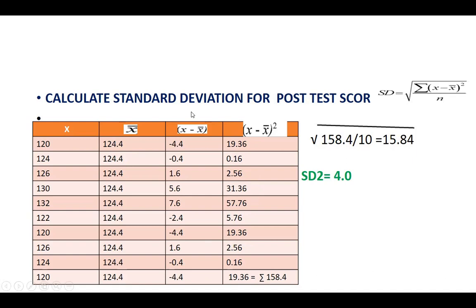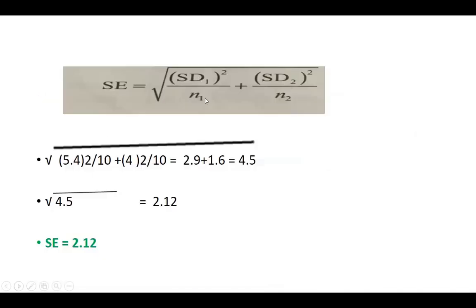Next, calculate the standard deviation for the post-test using the same formula: Σ(x - x̄)² = 158.4, divided by 10 = 15.84, approximately 16. Square root of 16 gives SD₂ = 4. Now calculate standard error: √(5.4²/10 + 4²/10) = √(29/10 + 16/10) = √(2.9 + 1.6) = √4.5 = 2.12.